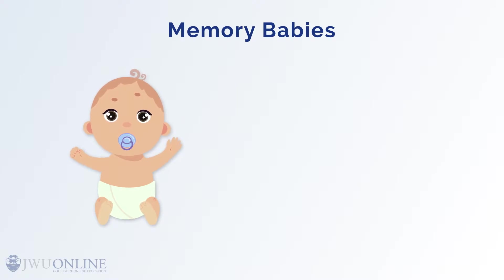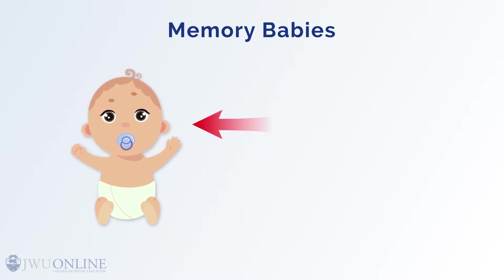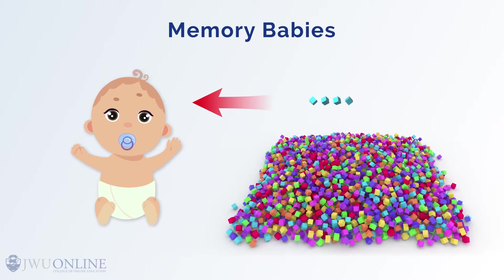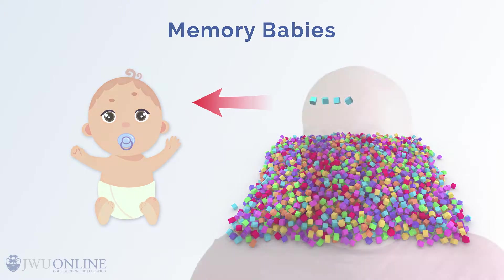So it is with the memory baby. Once the memory baby is made, we point to it using a C pointer that is of the correct type. Once that is done, as long as that pointer is not lost, the memory baby can become a useful part of the data set.